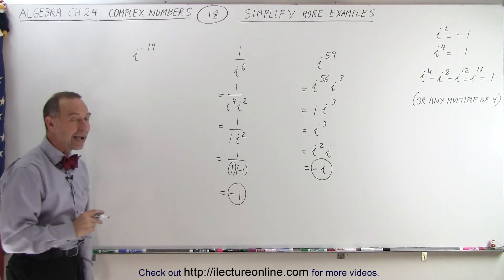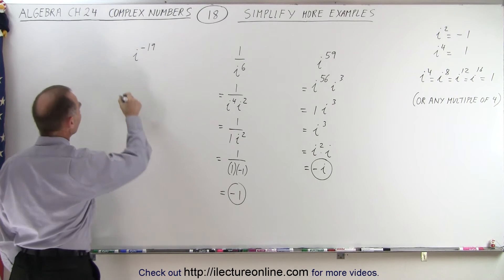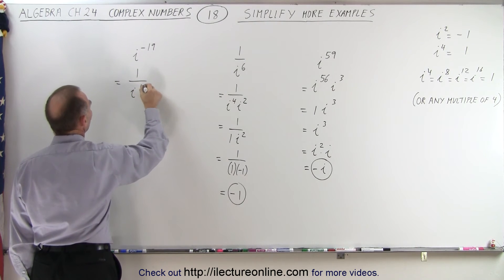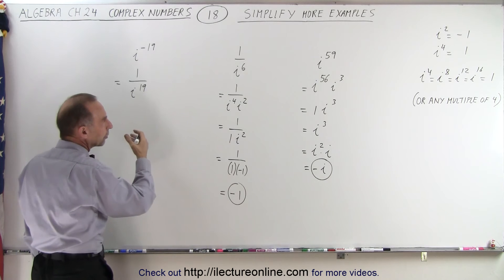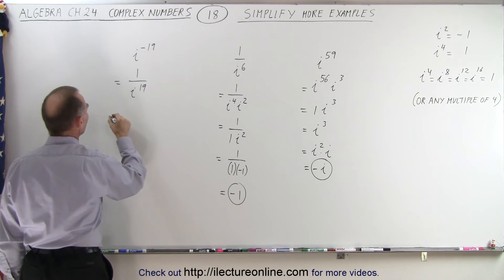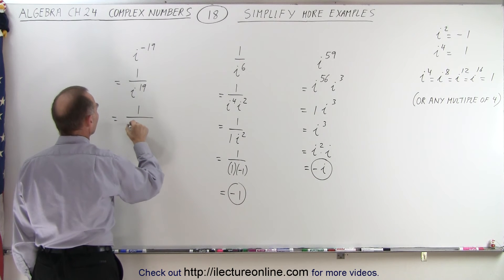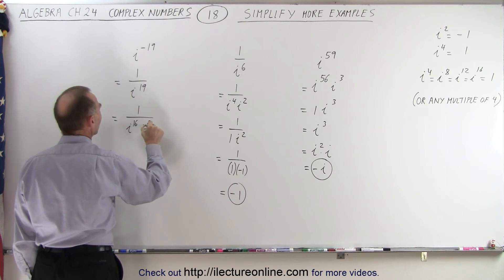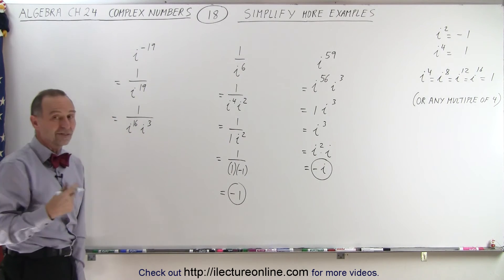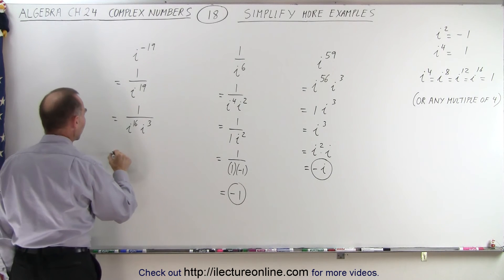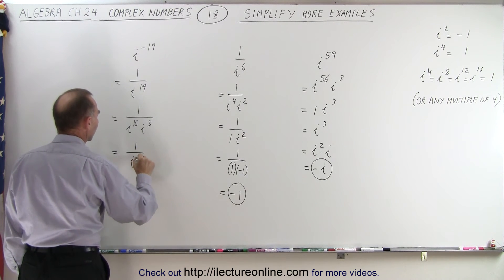And finally, i to the negative 19. So this can be written as 1 over i to the 19th power. Then again, you pull out a multiple of 4. So this can be written as 1 over, that would be i to the 16th times i to the 3rd. And of course you realize that i to the 16th is equal to 1. So this can be written as 1 over i to the 3rd.